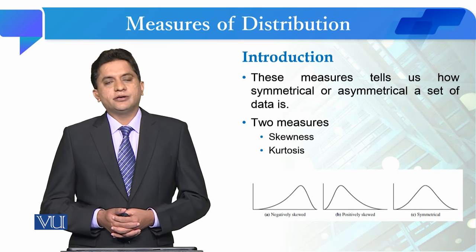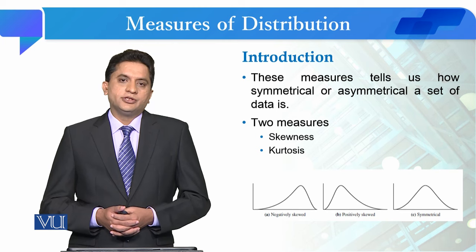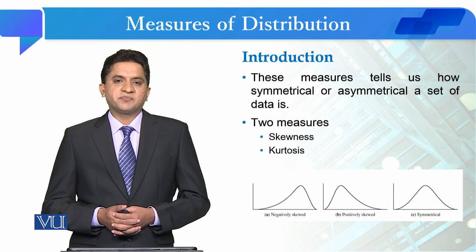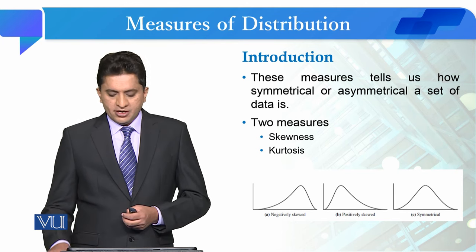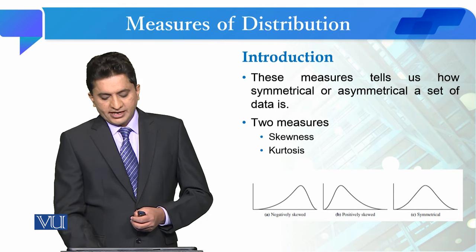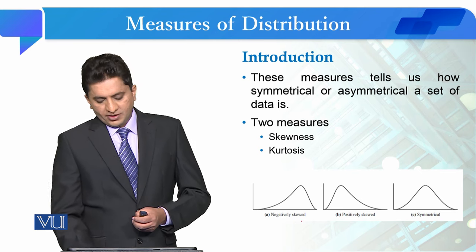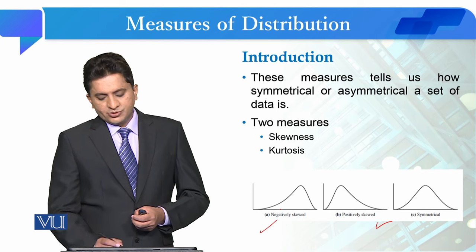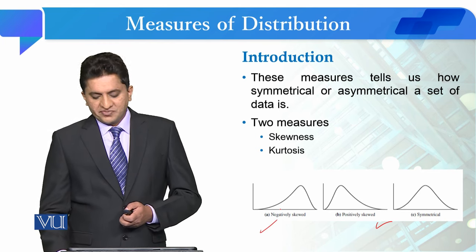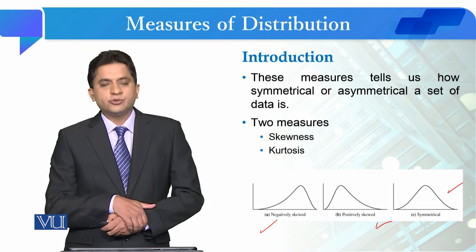Distribution has two basic measures: one is skewness and the other is kurtosis. Skewness tells us that data is not tilted. If you have more data tilted to the right side then it is positively skewed, and if you have more data tilted to the left then we call it negatively skewed. This is a proper symmetrical normally distributed data. So let's look at this in detail.